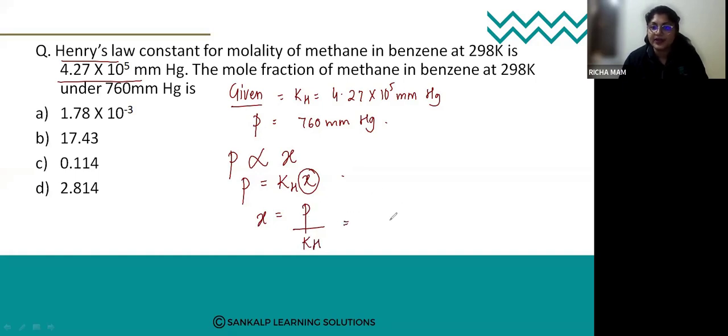So put the values: pressure is 760 mmHg and your KH, that is Henry's constant, is 4.27 × 10^5 mmHg.